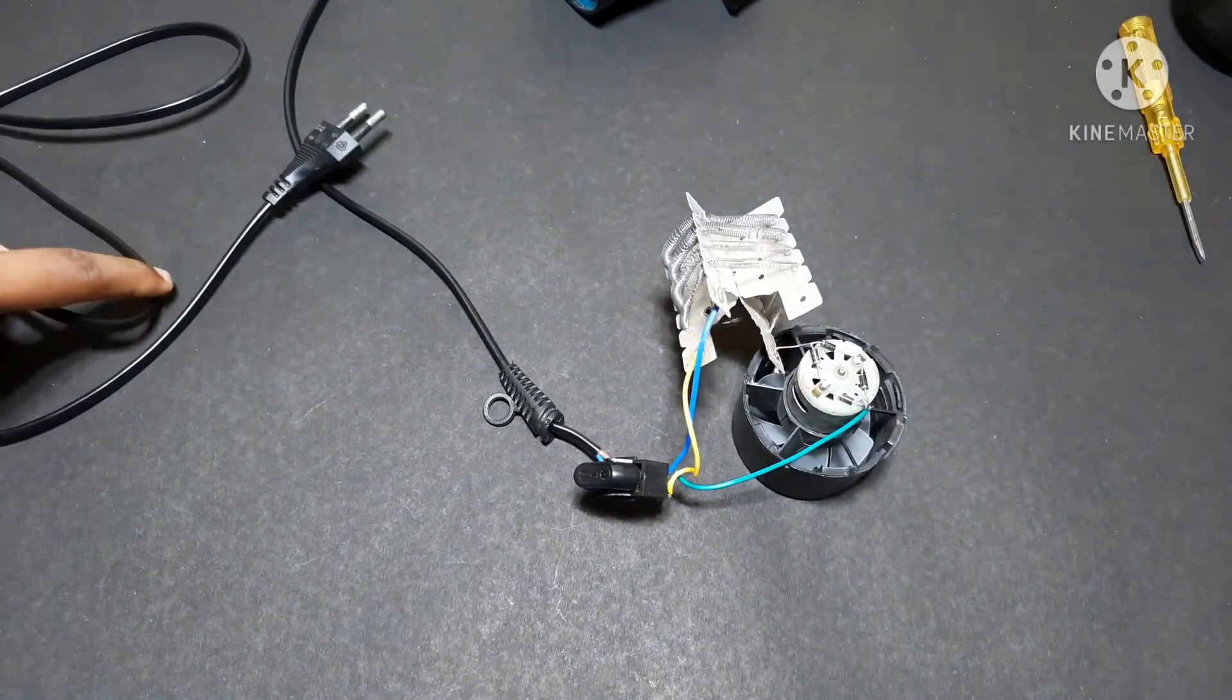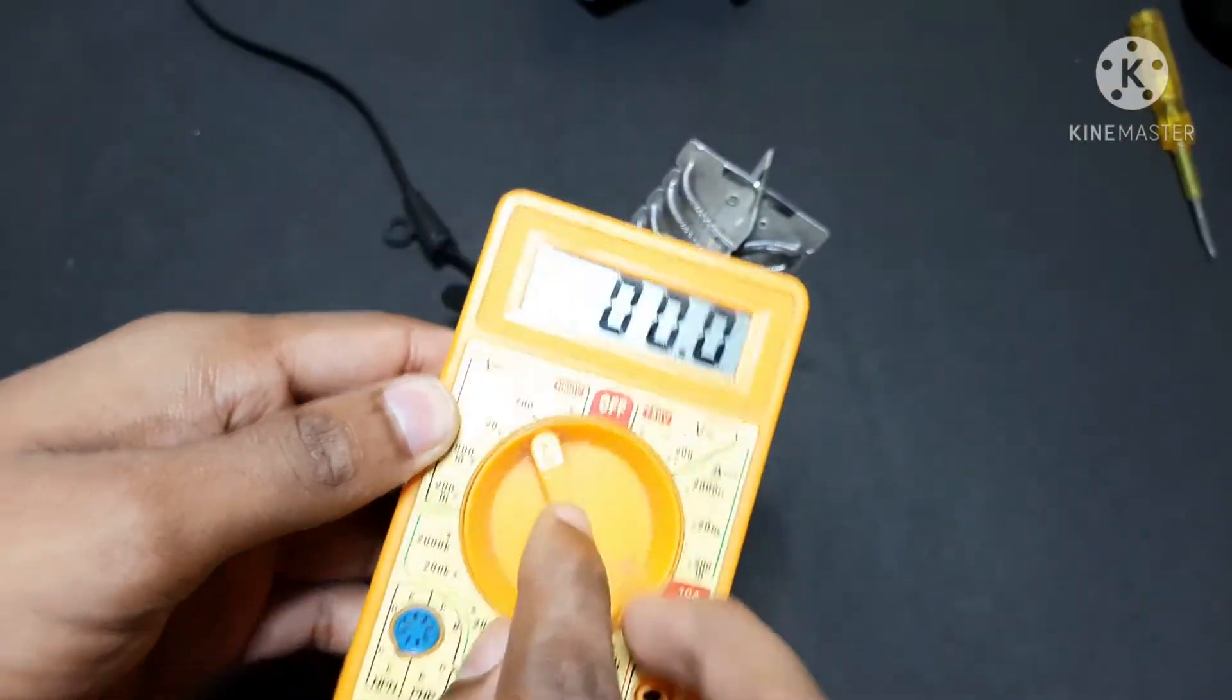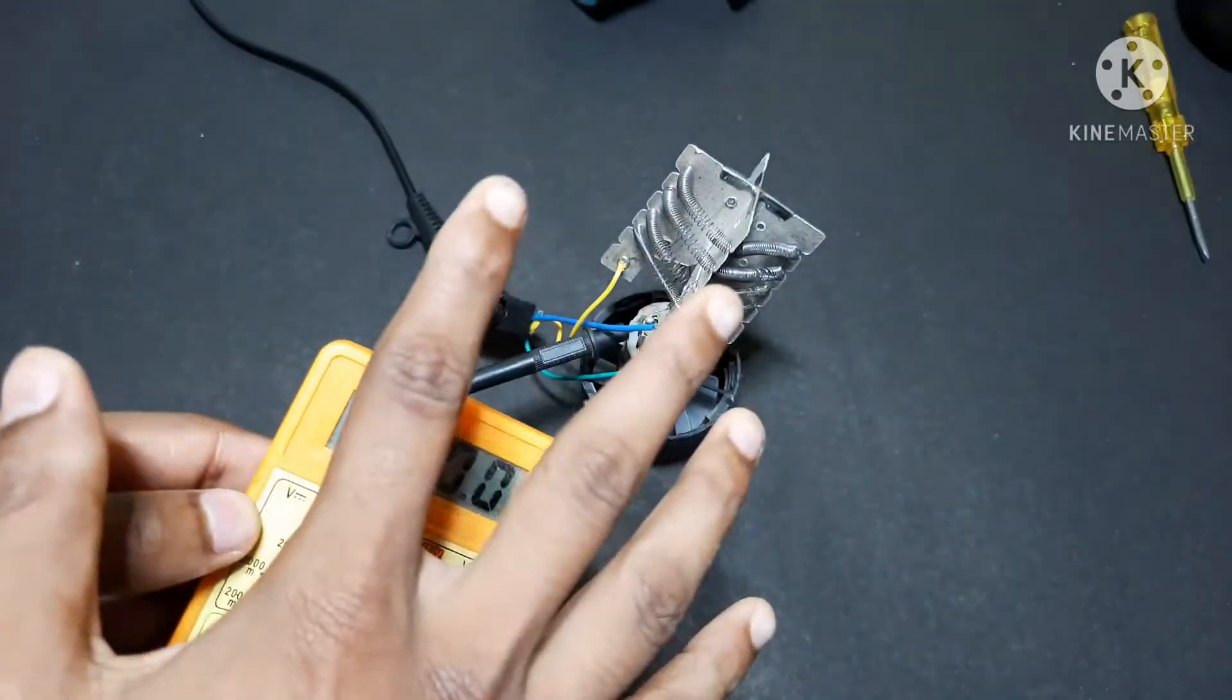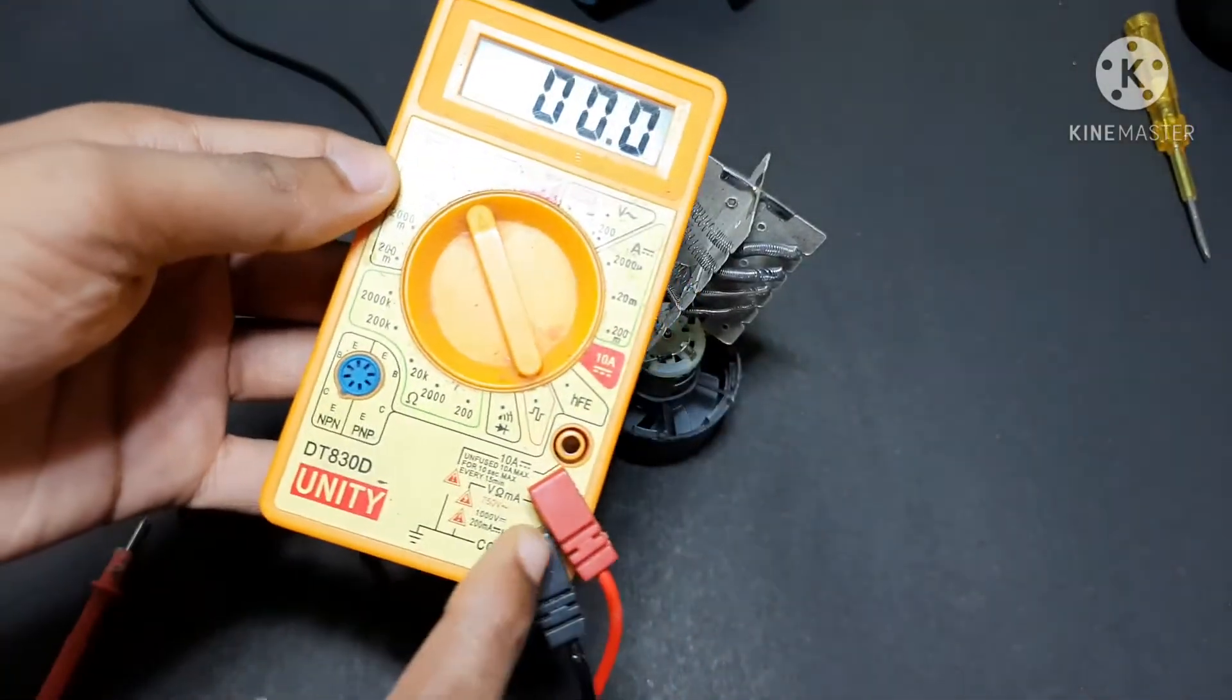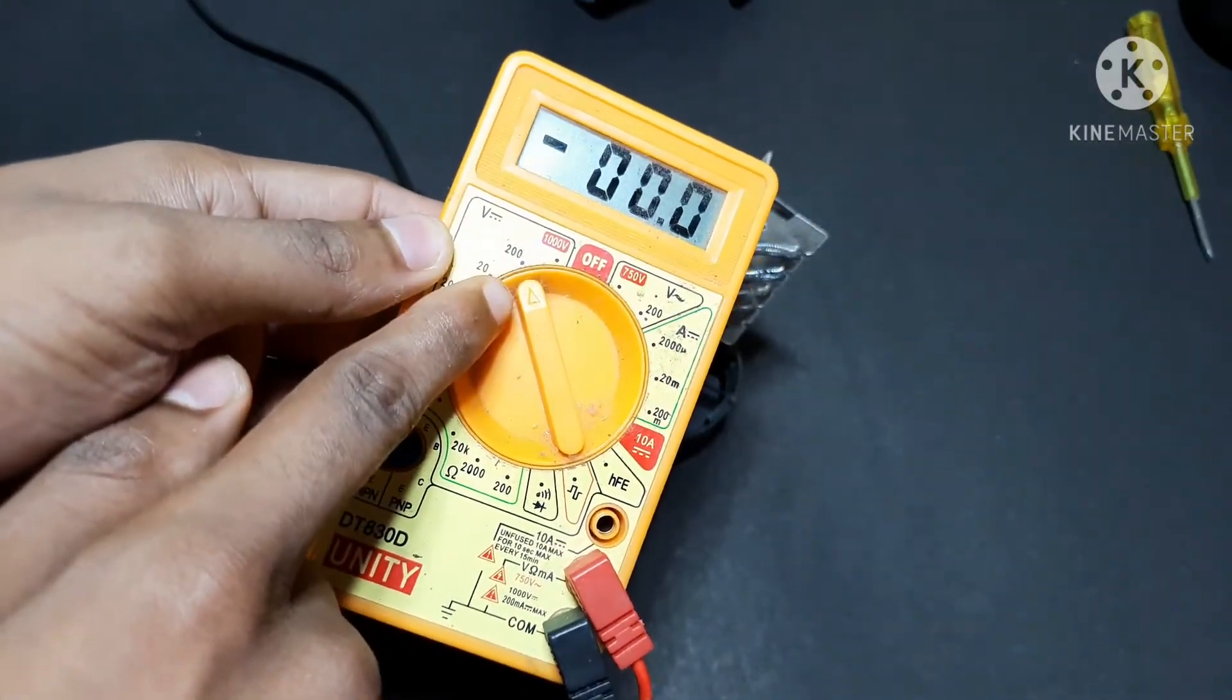I want to check the voltage across this motor. Okay, I put the meter at 200 volts DC because I don't know how much voltage appears across the motor terminals. That's why I'm putting it to that DC supply, 200 volts.